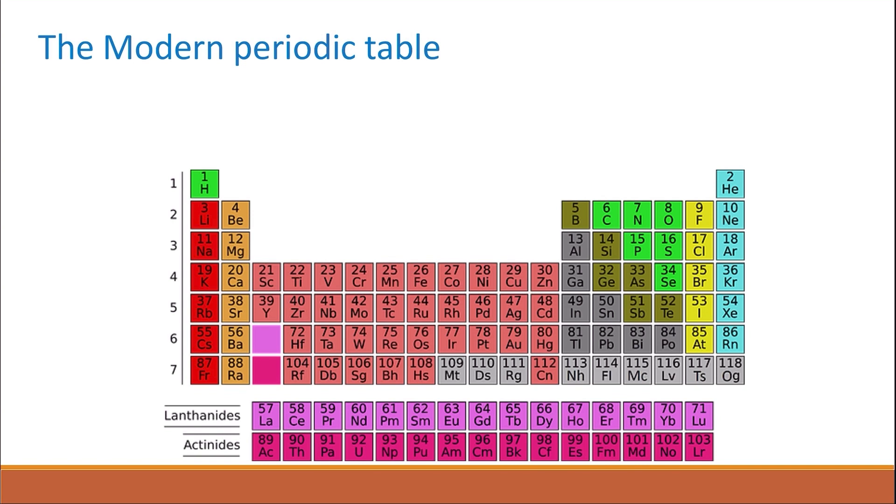Today, we have a table with 118 elements, organized by their atomic numbers, which reflects their electronic structure.